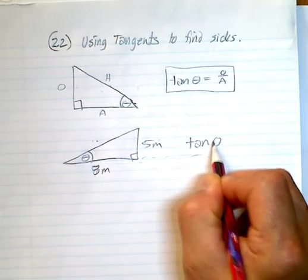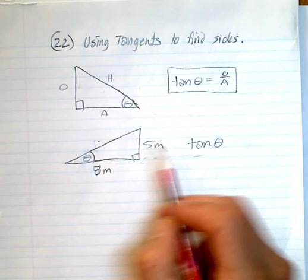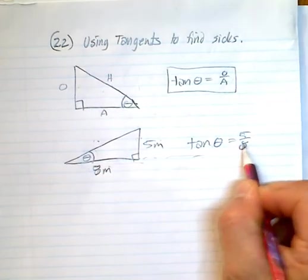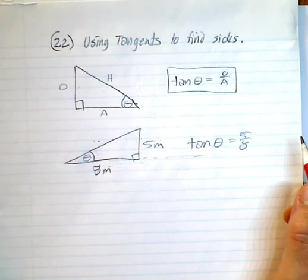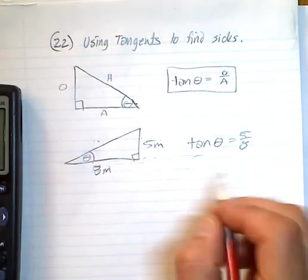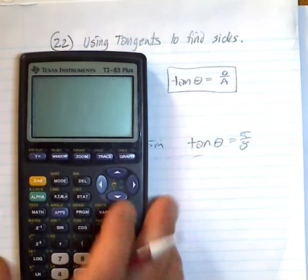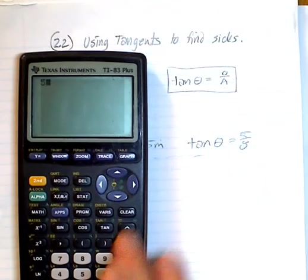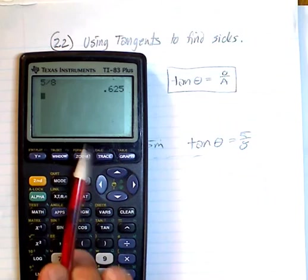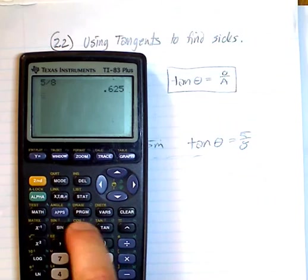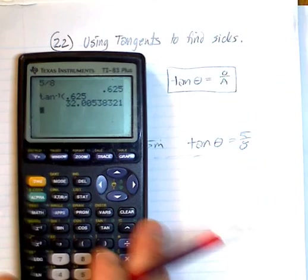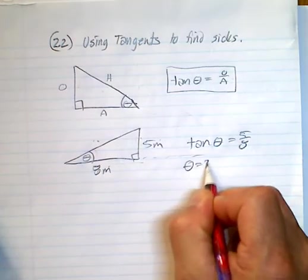We said the tan of that angle there is equal to the opposite over the adjacent, equals 5 over 8. So the ratio is 5 over 8. We go 5 divided by 8, 0.625, and we go second tan of 0.625 and we get an angle of 32 degrees.